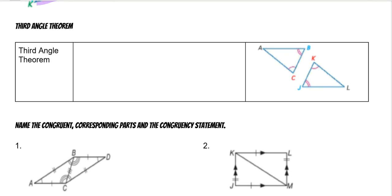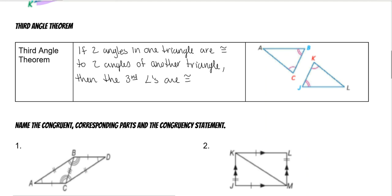Third Angle Theorem: if two angles in one triangle are congruent to two angles of another triangle, then the third angles are congruent. Just like in this picture — because we know these two pairs of angles are congruent, then the third angles will also be congruent. We know that because of the 180-degree sum. If the bottom two are going to be the same, the third ones have to be the same.